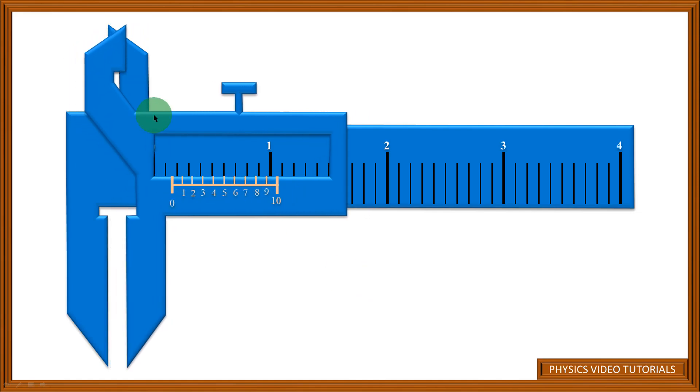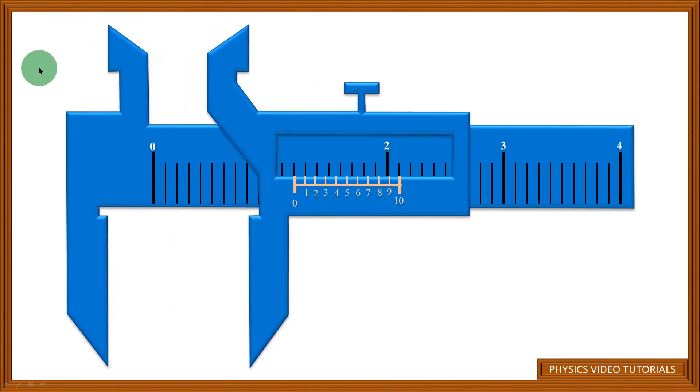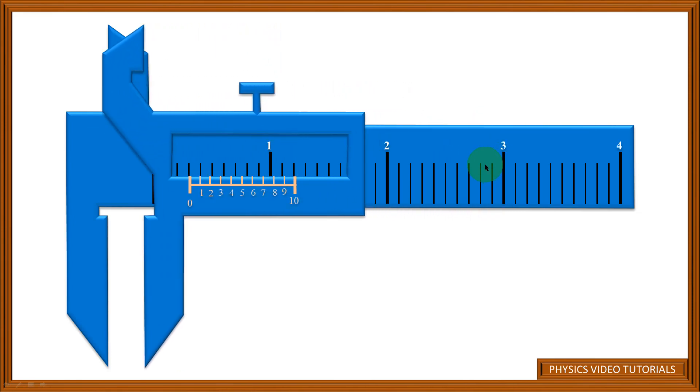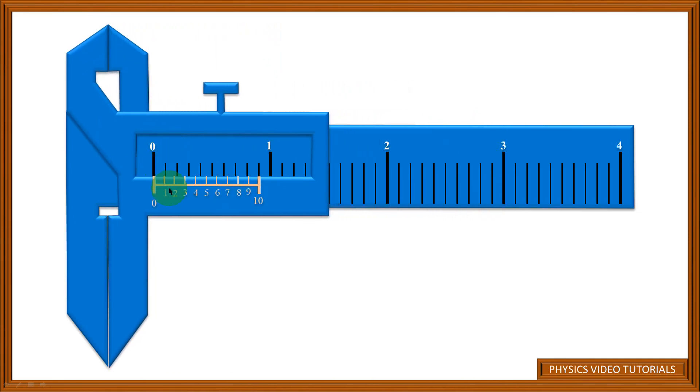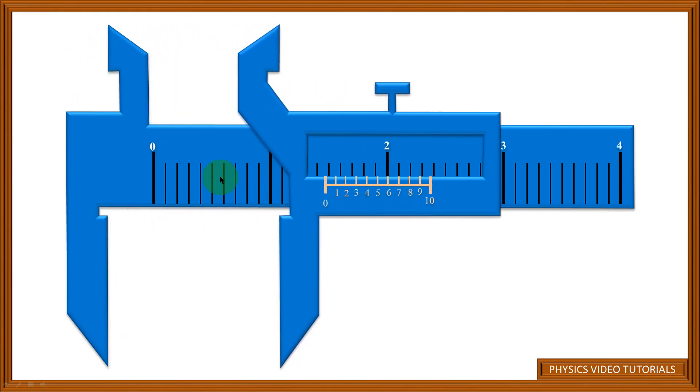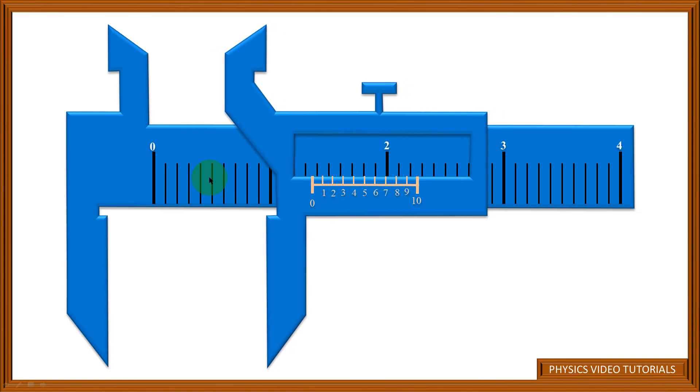Of course, those who teach physics know that this is the sliding jaw while this is the fixed jaw. There is a Vernier scale on the sliding jaw, while on the fixed jaw there is what we refer to as the main scale.